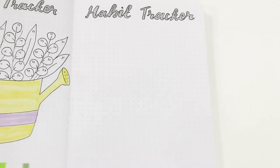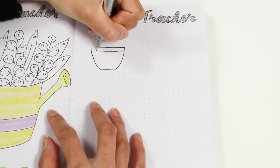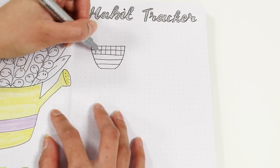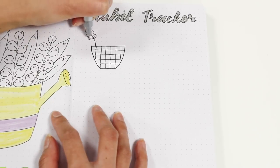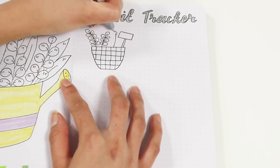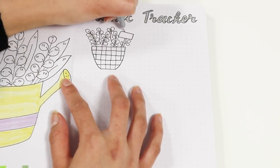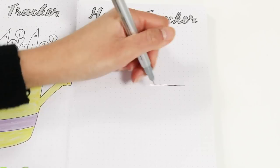For my habit tracker I'm just drawing three pots and dividing each pot into 31 squares, which was quite tricky because it's an odd number and the pot is an irregular shape. But I think I managed all right. On the pots I just drew plants to make it cuter, and then I'm adding a label to show what habit I'm tracking.